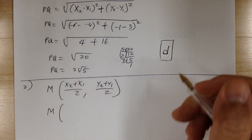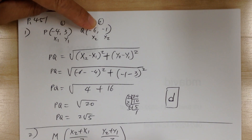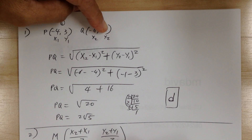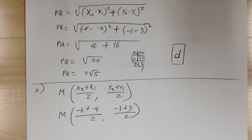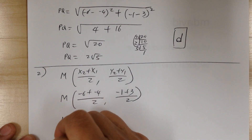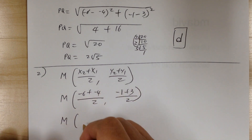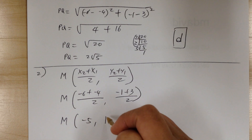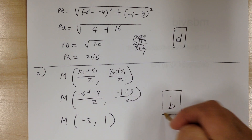For the two points, you've got negative 6 and negative 4 over 2, and y would be negative 1 and 3. Averaging it out: negative 10 over 2 would be negative 5, and 2 over 2 would be 1. So the midpoint is negative 5, 1 — the answer is B.